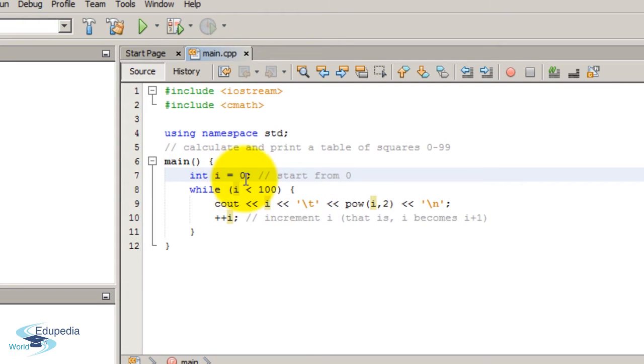Now the value of i is 0. Therefore, we can go inside of this while loop code block.